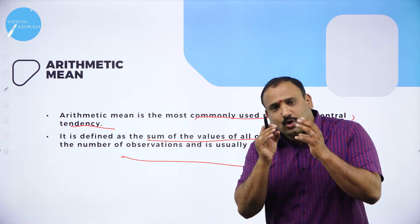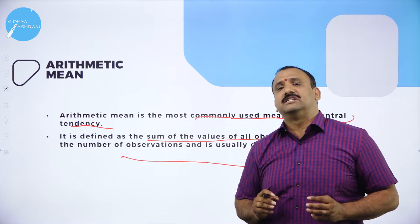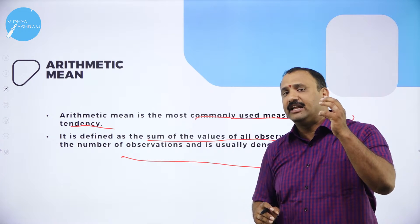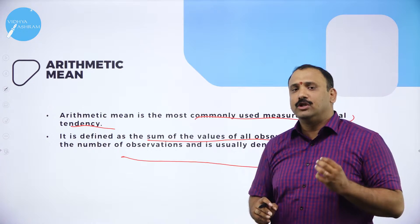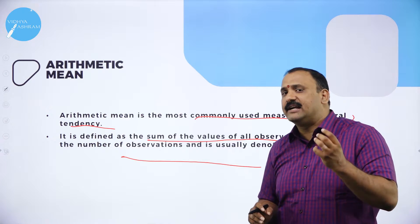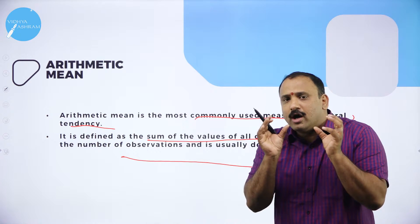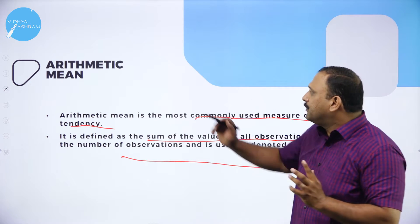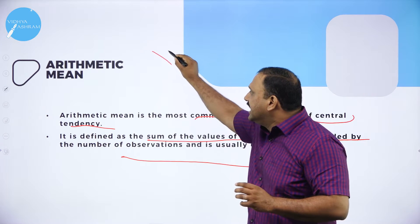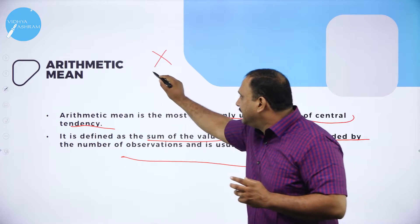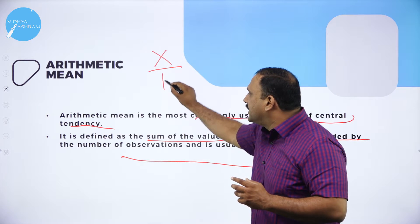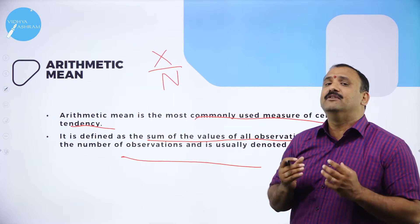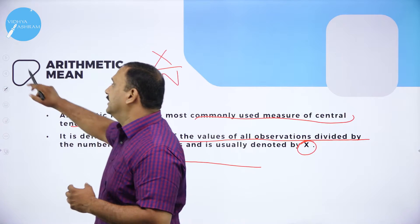For example, if you are doing statistical research — a field study where you collect data from 20 samples — you will have data from 1 to 20. Take all the numbers, add them, and divide by 20. So x-bar equals the summation of x divided by n, where n is the number of observations. That is how you get the arithmetic mean of the given data.